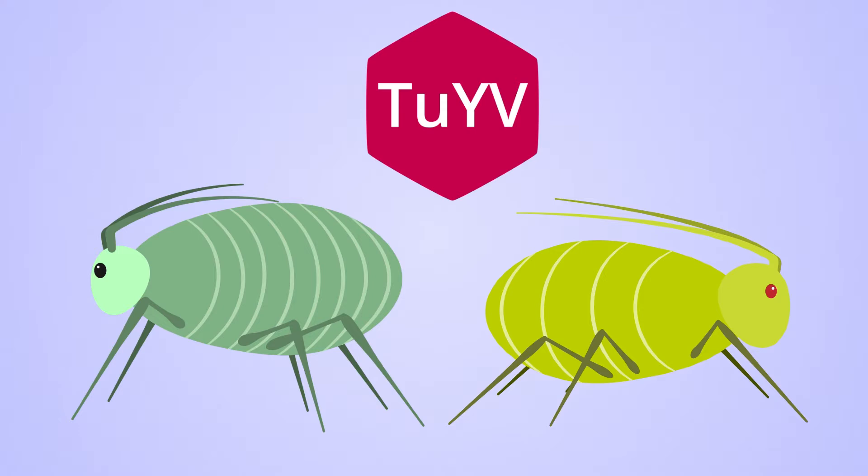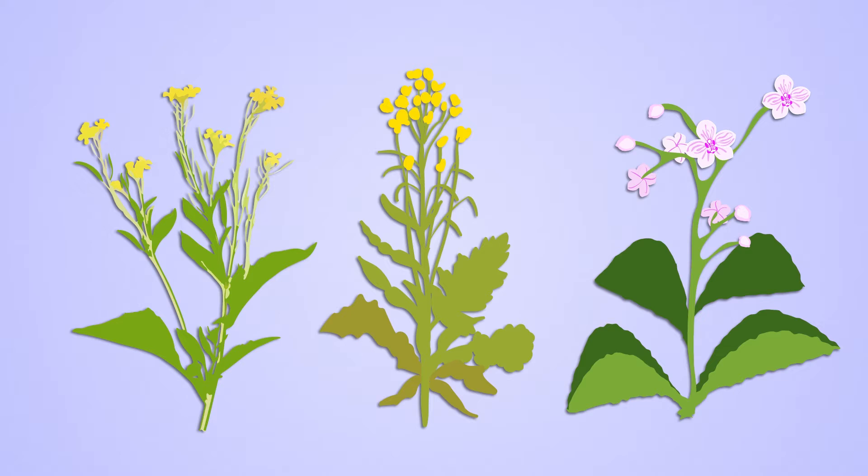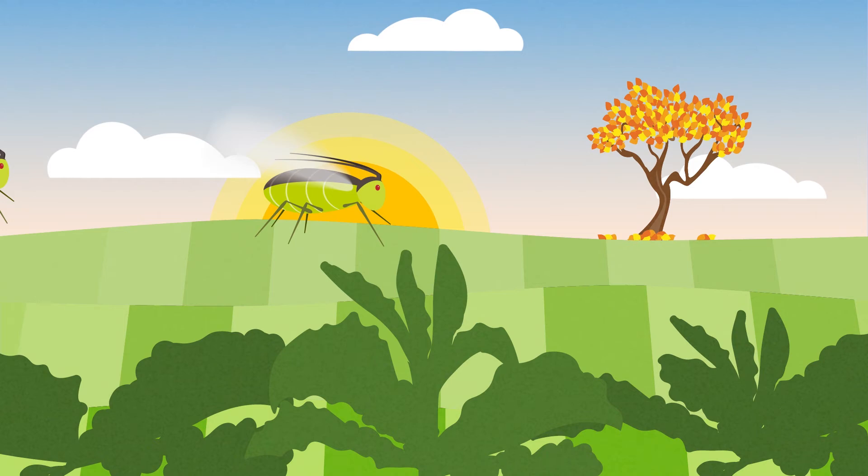The vectors of the turnip yellows virus are the green peach aphid and the mealy cabbage aphid. In addition to rapeseed, the virus can be found in many other plant species, which enables it to spread massively.